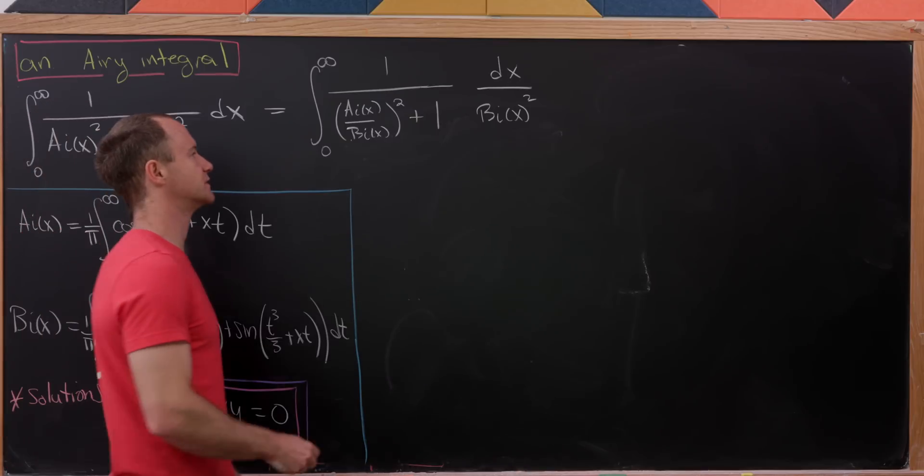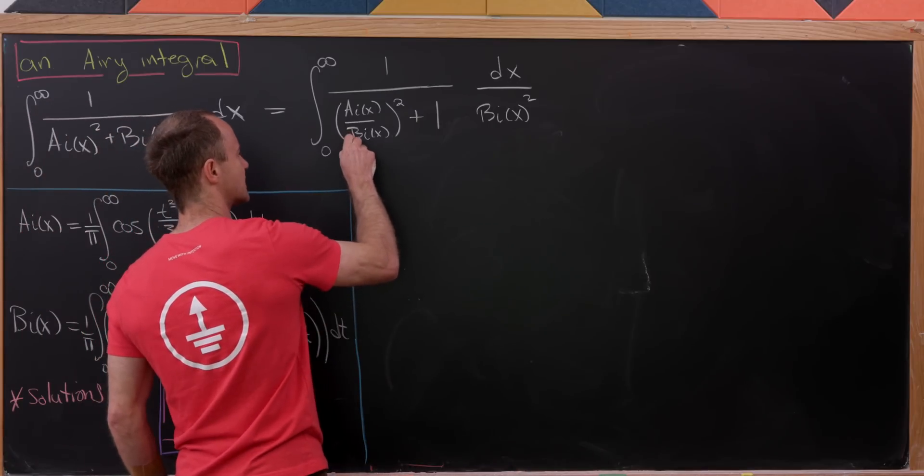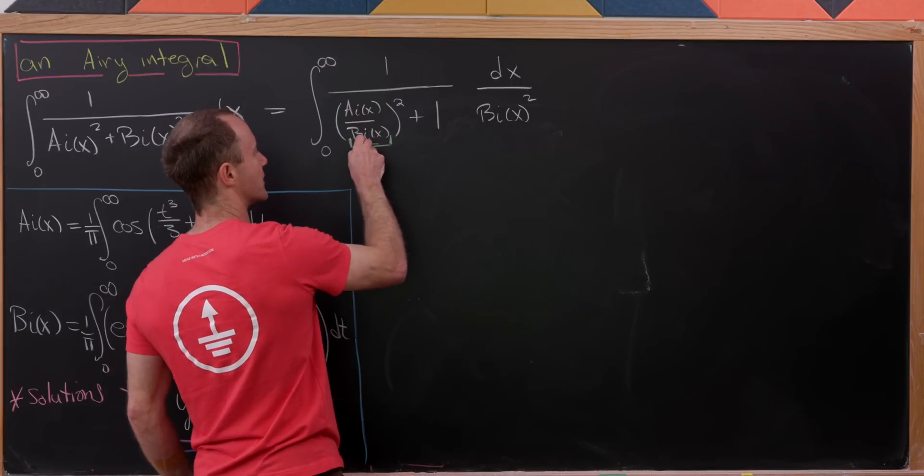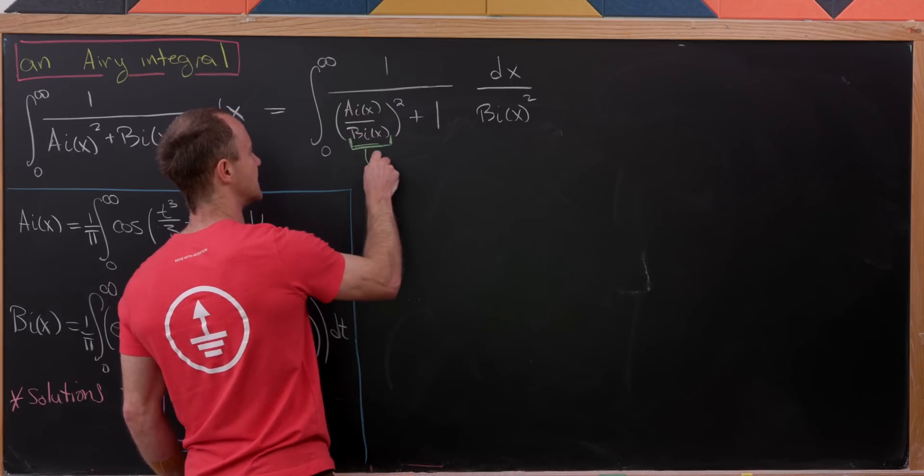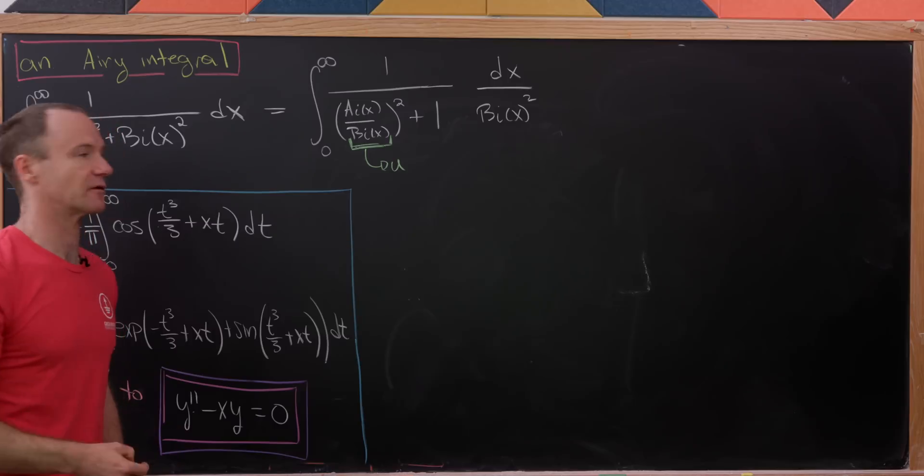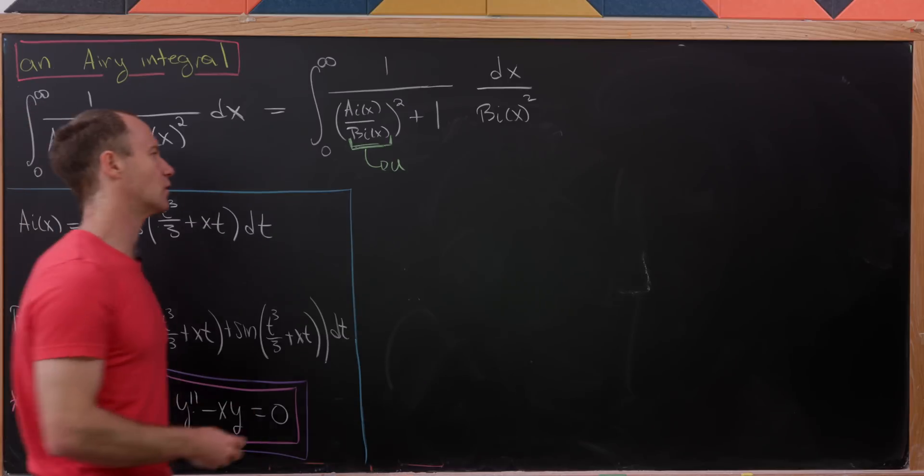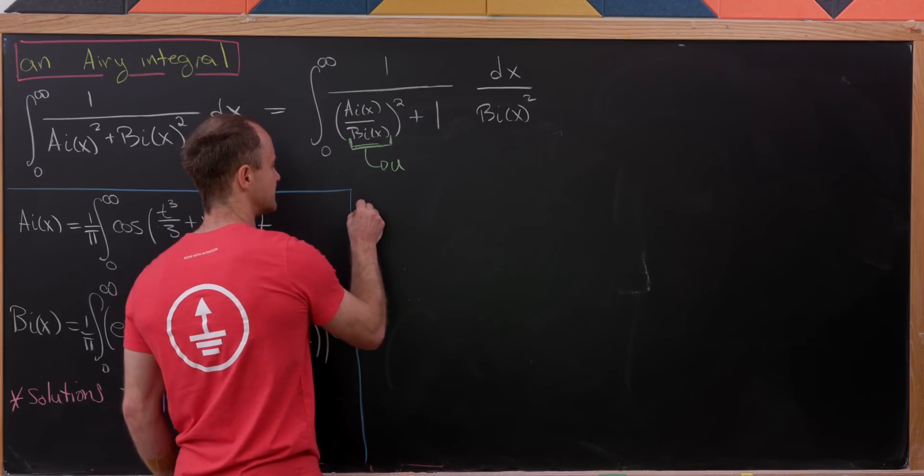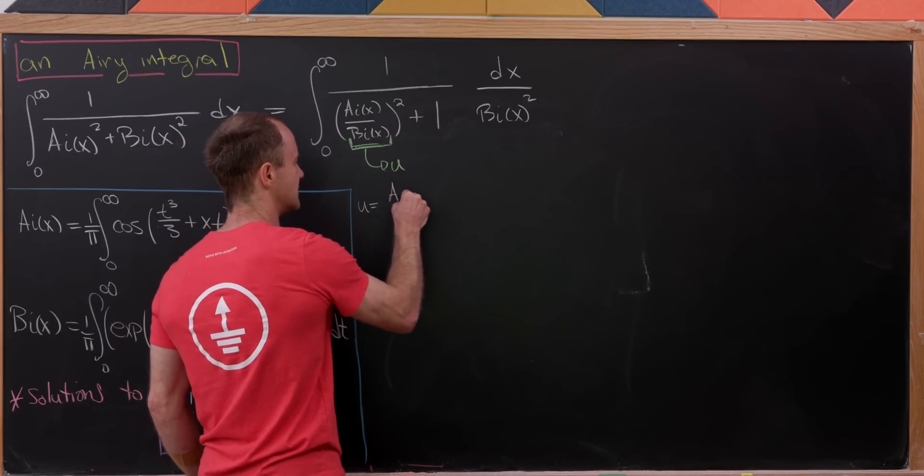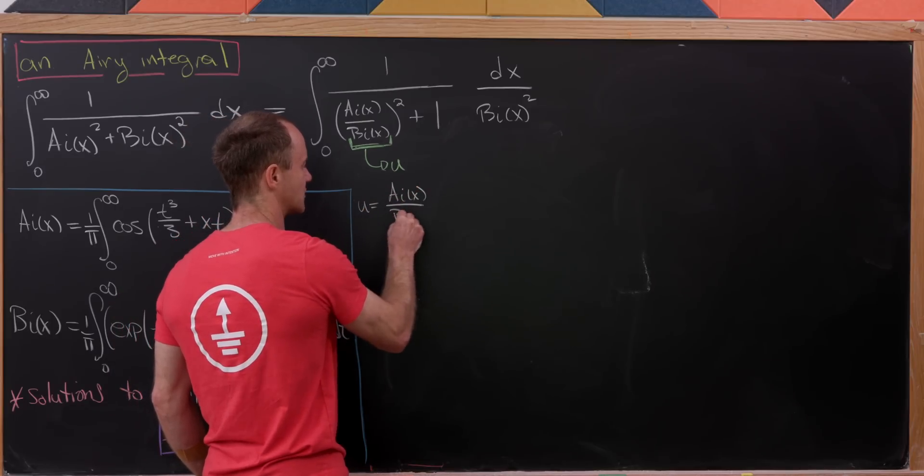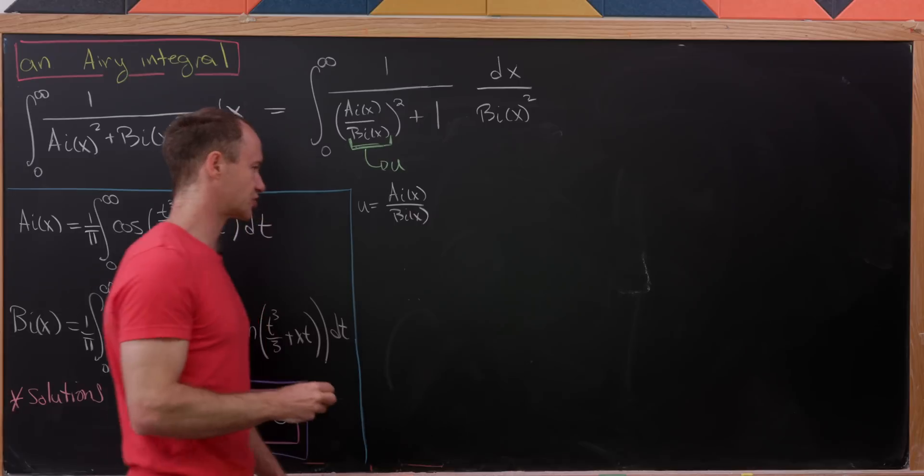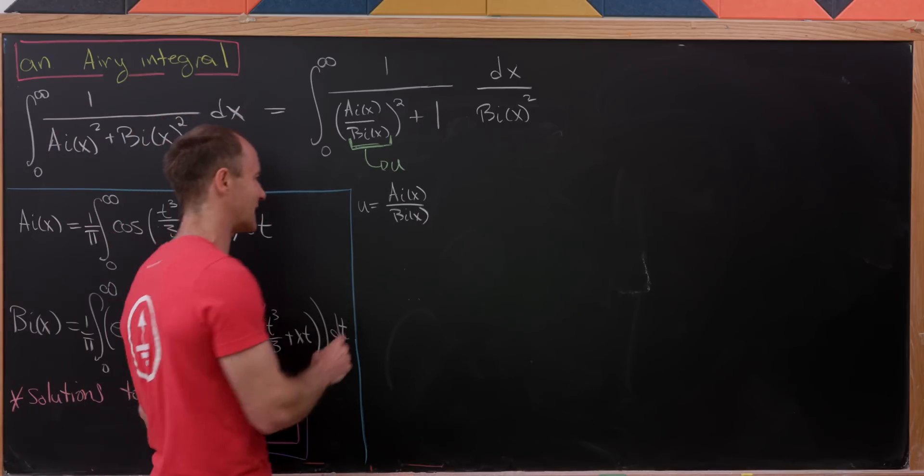Now we're going to start with our u substitution. So we're just going to hope that if we take u to be equal to this quotient AI over BI, then everything will work out. And we'll see that it does. So we'll take u to be the AI Airy function over the BI Airy function. And then we'll follow our nose by taking du.